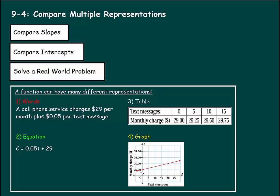We're on Lesson 4 of Chapter 9, where we're going to compare multiple representations. First, we're going to compare slopes, then we'll compare intercepts, then we'll solve a real-world problem.